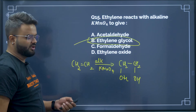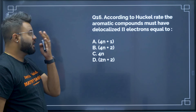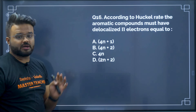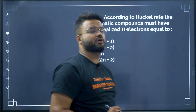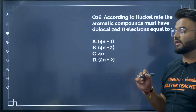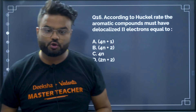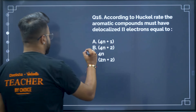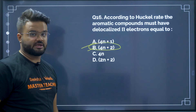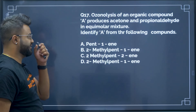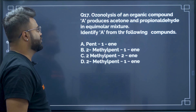Question 16: According to Hückel's rule, an aromatic compound must have delocalized π electrons equal to 4n+2. This is a direct question. Therefore option B is your correct answer.